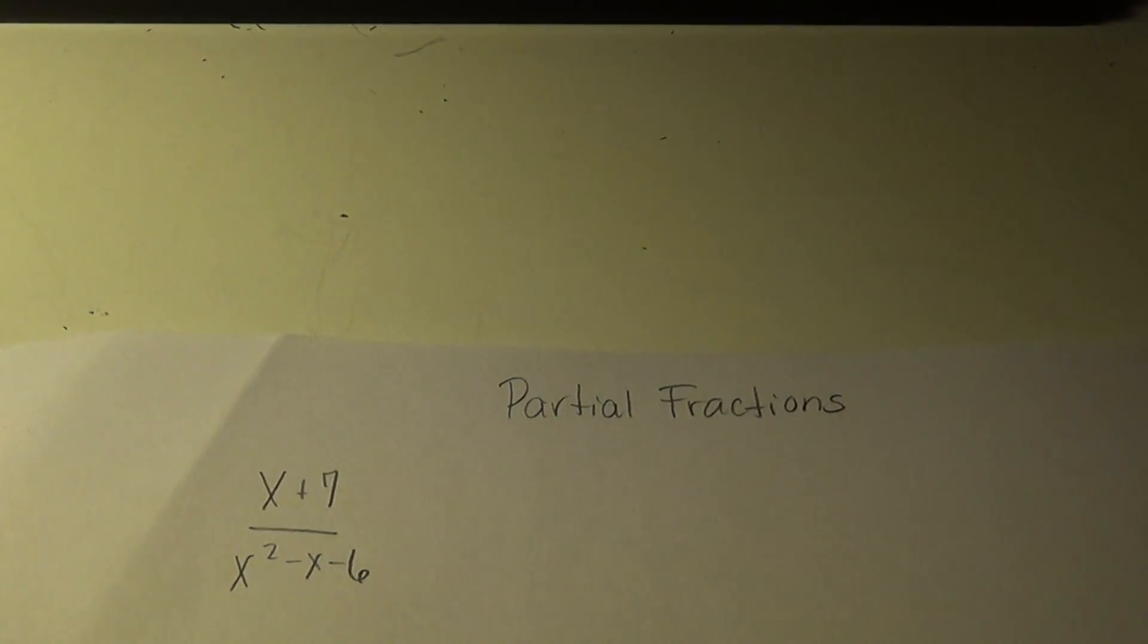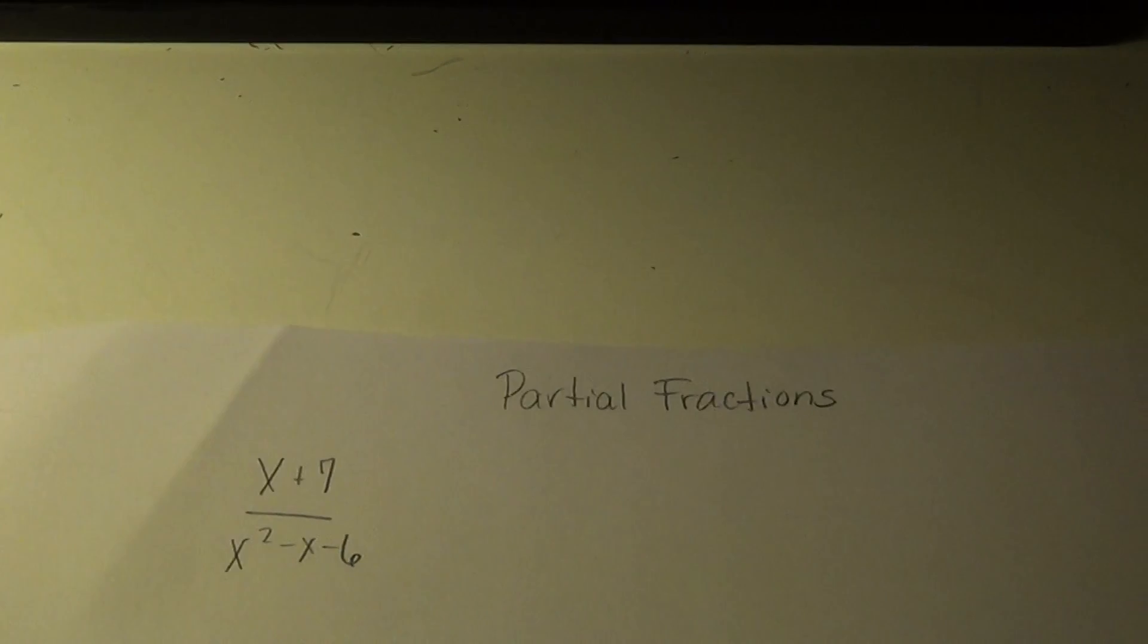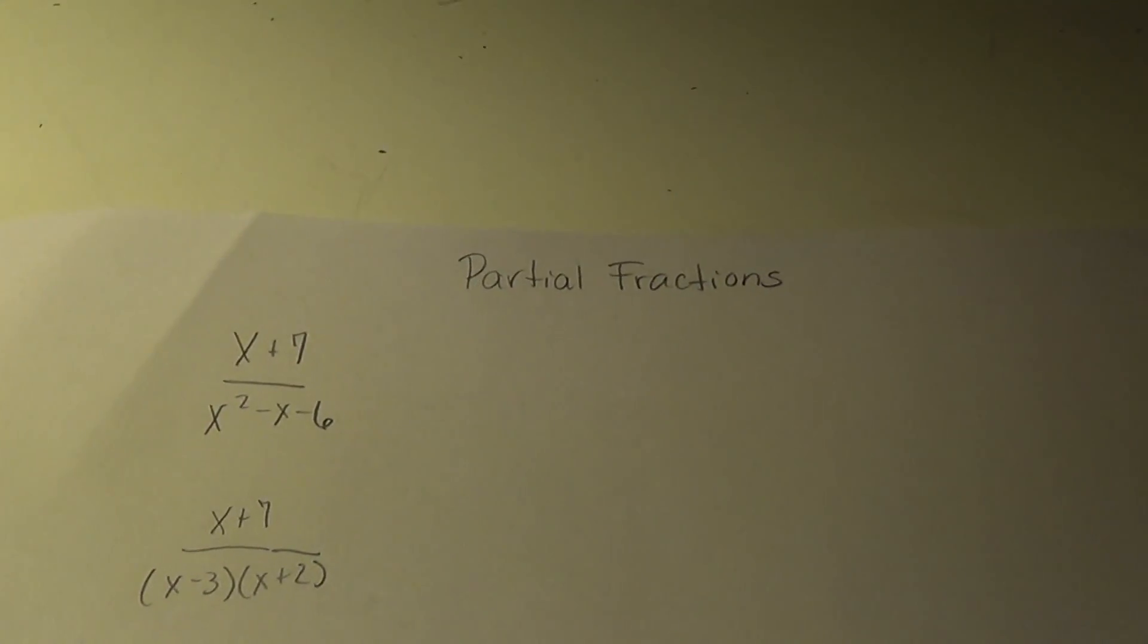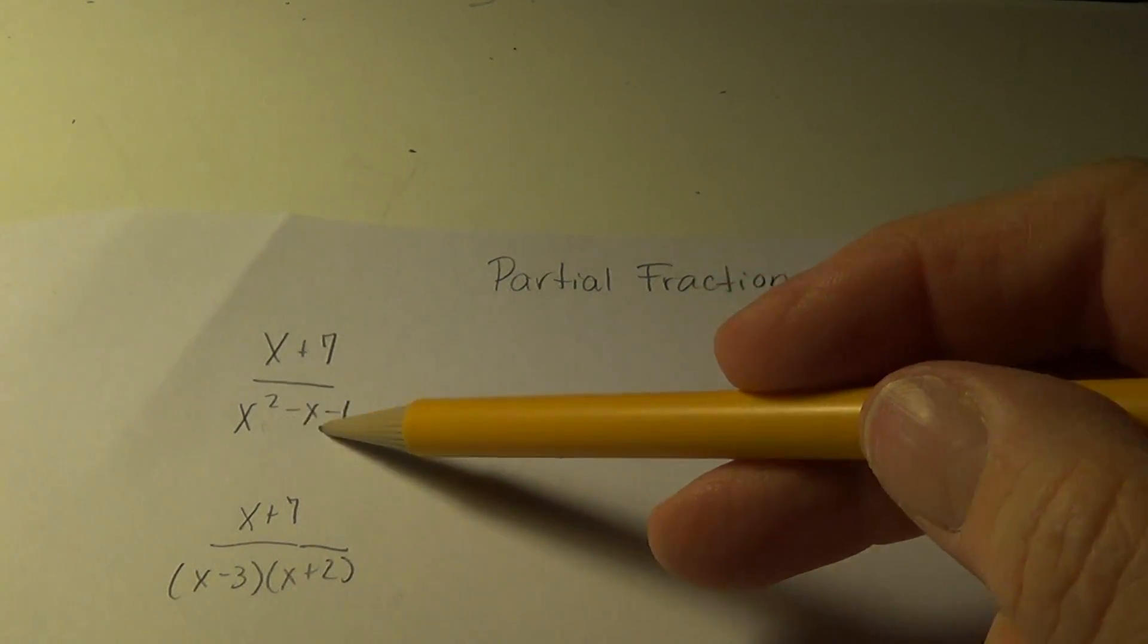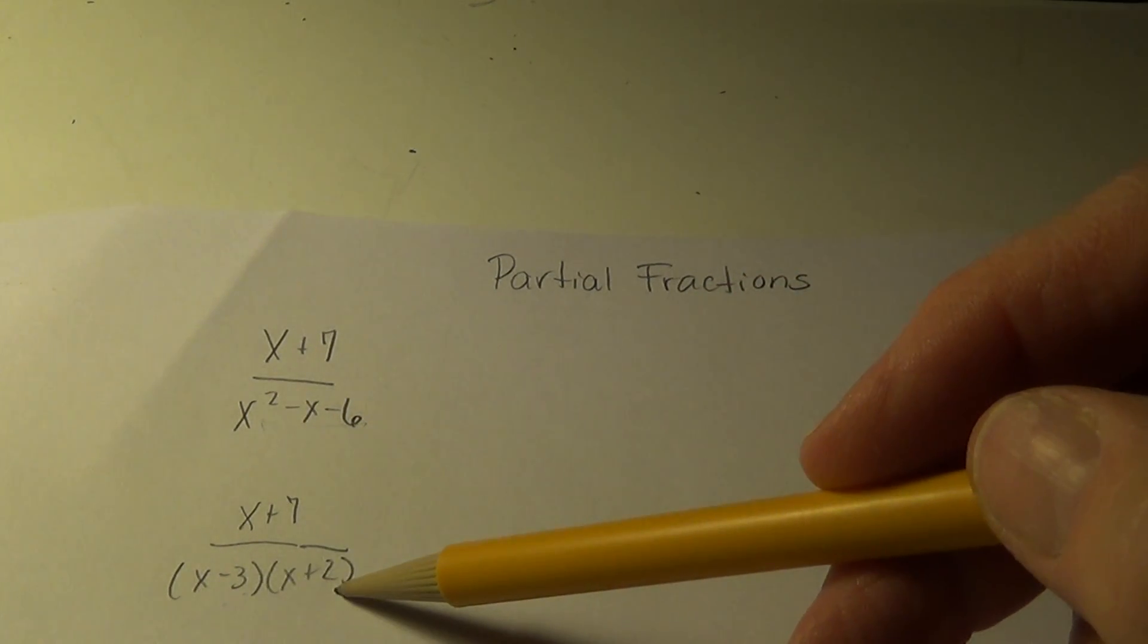First of all I'm going to factor the bottom. When I factor the bottom I get x plus 7 over, this factors into x minus 3, x plus 2.